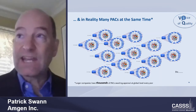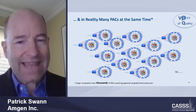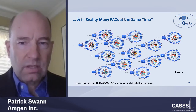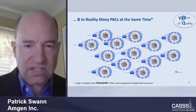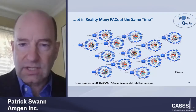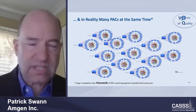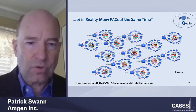Many post-approval changes are in flight at the same time, and the logistical challenge is multiplied yet again. Larger companies have thousands of post-approval changes awaiting approval at a global level every year, creating real difficulty in tracking what's approved in which country at what time and assuring that the released product is consistent with the application. All these communications need to be appropriately managed and controlled. This is the One VQ pictorial showing some of the complexity around post-approval changes.